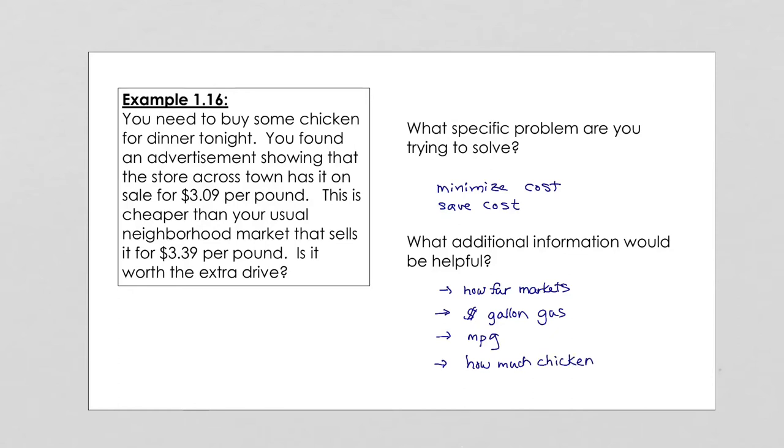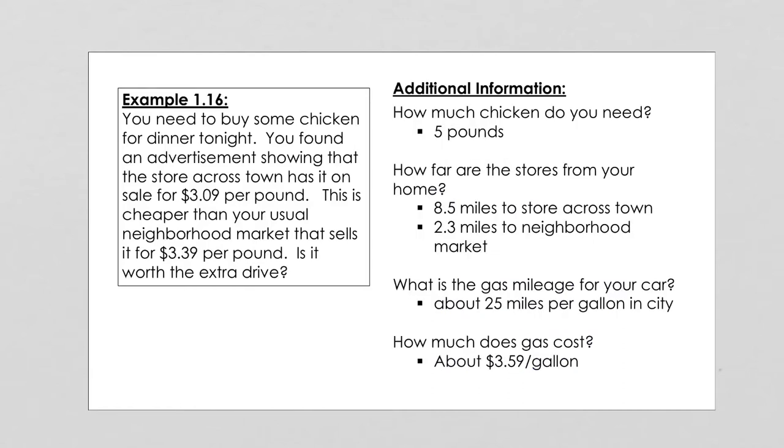Once you get a problem like this, you want to analyze it and say what is it you're solving for, and then what information do you need to solve this problem. Let's gather that information. Suppose we're told that we need five pounds of chicken and that the store across town is eight and a half miles, but the neighborhood market is only 2.3 miles away. The gas mileage for our car is 25 miles per gallon, and gas right now is running at about $3.59 per gallon. Now we have all that information that we need, and we're ready to actually solve this problem.